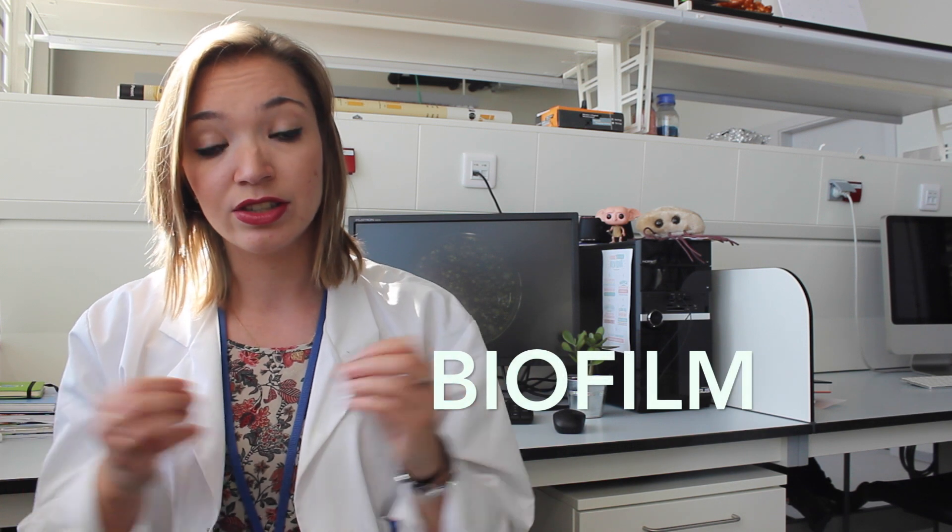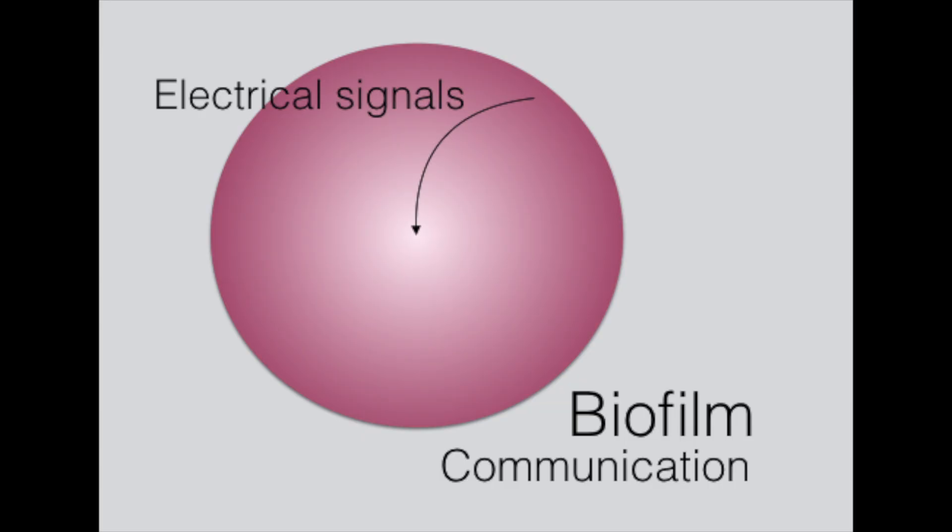Although bacteria seem to be very simple organisms, they have the ability to communicate with each other. For example, if you have a biofilm, which is a community of bacteria stuck together and to a surface, the bacteria on the outside of the biofilm are able to communicate through electrical signals with the bacteria living in the inside of the biofilm.